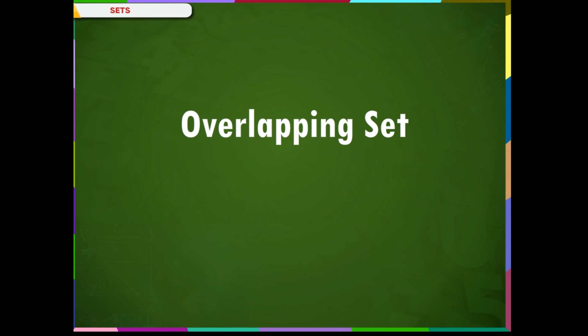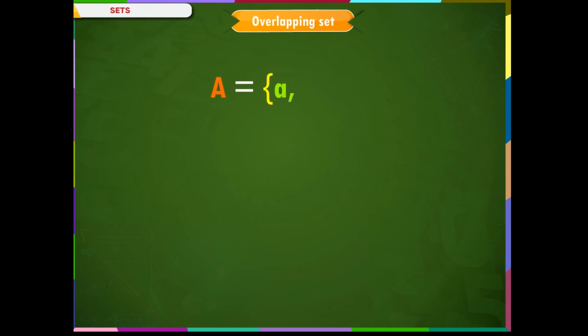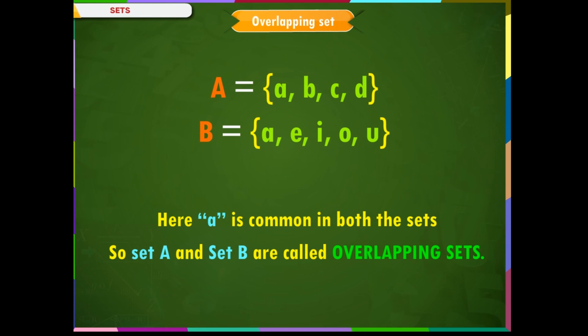Overlapping set. Two sets A and B are said to be overlapping if they contain at least one element in common. For example, A = {A, B, C, D} within curly brackets and B = {A, E, I, O, U} within curly brackets. Here, A is common in both sets. So, set A and set B are called overlapping sets.